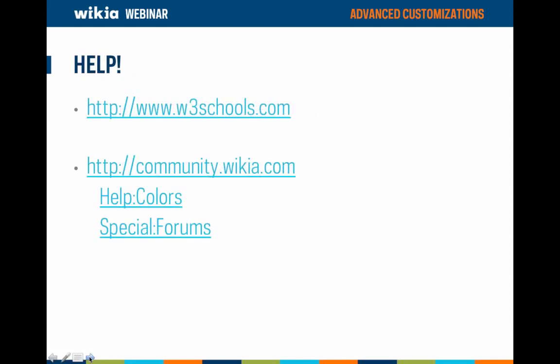Here are some resources referenced in this presentation. w3schools.com is a great place to learn about CSS, color codes, HTML elements, and other parts of coding — a very comprehensive resource. You also have community.wikia.com, Wikia's official community wiki. The help colors page explains basic HTML colors and how to find hexadecimal color codes. There's also a special support forum where many users who have been editing CSS for years will be happy to help you with tips and even share some code to get you started.